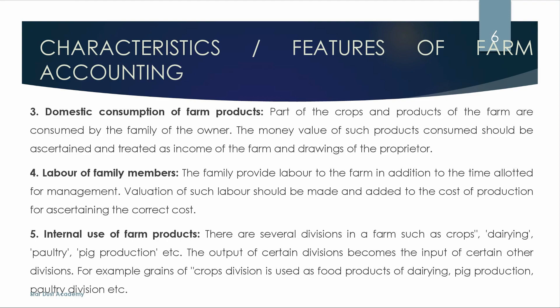Next is Labor of Family Members — family members who participate in farm work are accounted for. Next is Internal Use of Farm Products — for example, if crops from a farm are used within a poultry farm as feed, that is called internal use of farm products.